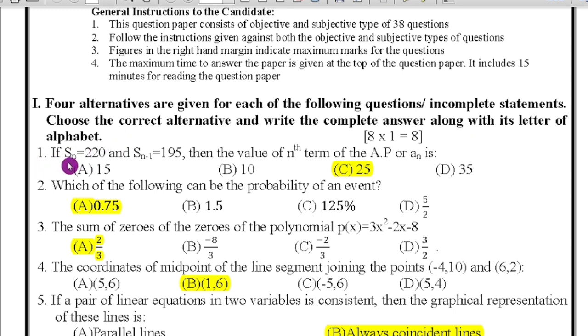First question: if Sn equals 220 and S(n-1) equals 195, then the value of nth term of the AP or an is 15, 10, 25, or 35. Here you have to find an. So an equals Sn minus S(n-1), so that's 220 minus 195, then you will get the answer 25. Therefore an equals 25.